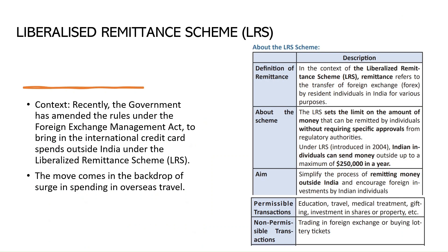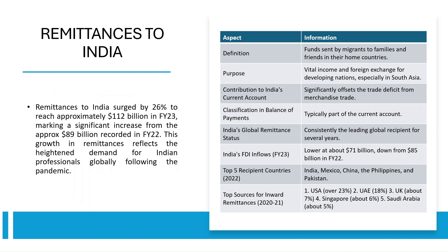The government has amended rules under the Foreign Exchange Management Act to bring international credit card spends outside India under the Liberalized Remittance Scheme. This move comes in the backdrop of a surge in overseas travel spending. Remittances to India surged 26% to reach approximately 112 billion dollars in FY23. The top five receiving countries are India, Mexico, China, Philippines, and Pakistan. Top sources are USA, UAE, UK, Singapore, and Saudi Arabia.